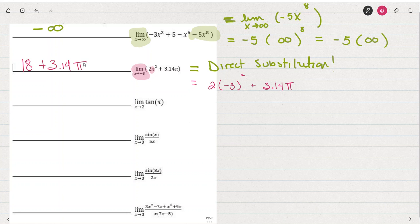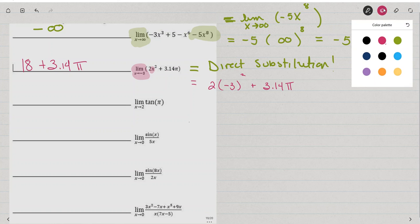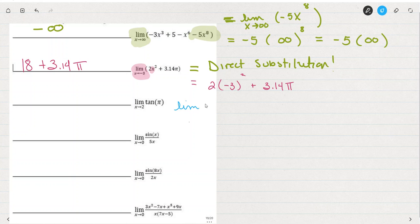Next, we have the limit of tangent of π as x approaches 2. This is a trick question almost because by direct substitution, there's no x. What's the limit of a constant? The limit of a constant, no matter what x approaches, 791, no matter what it approaches, the constant is still the constant. So we could say that the limit as x approaches 2 of this constant, tangent π, is going to equal the tangent of π. I could write that this is the tangent of π, but the tangent of π can be simplified.